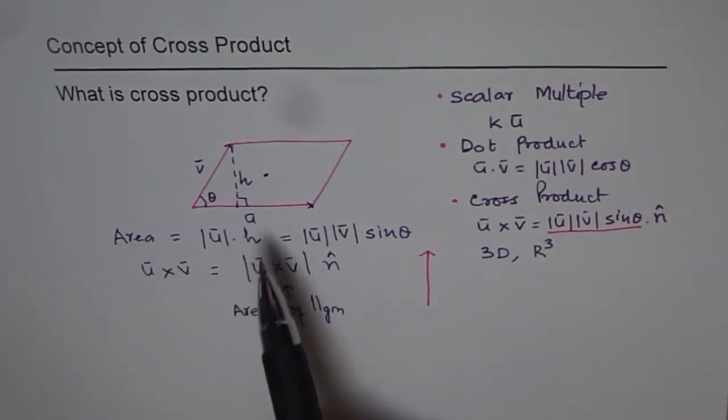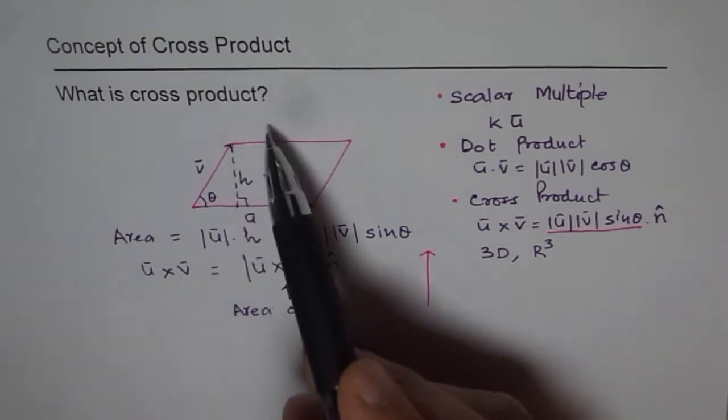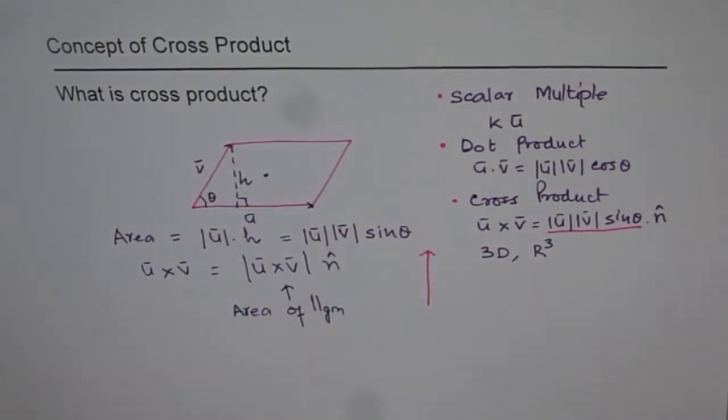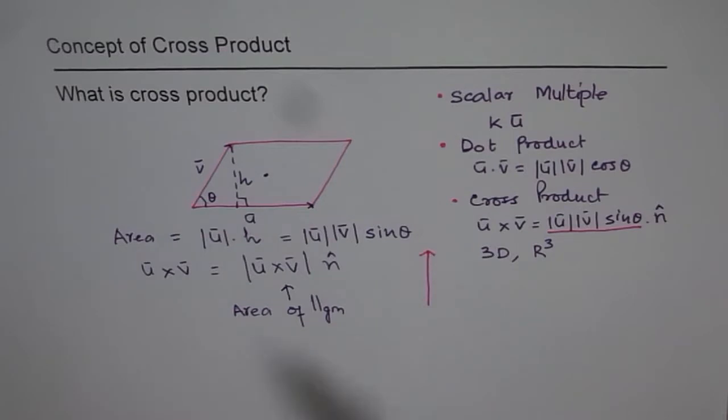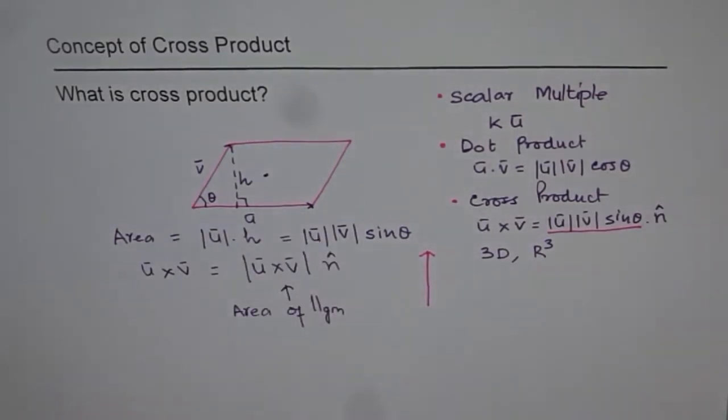The direction is normal to the plane of U and V as if it is shooting out of this page towards you. That is where the magnitude, the area of this, bigger the vectors, maybe in the same direction, more the magnitude. But the direction is unique, is coming out. And that is the normal to the page.